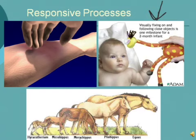The last responsive process is evolution. The picture shown is the evolution of the horse. This process occurs over long periods of time and enables a species to adapt and better survive long-term changes in its environment over many generations — not just one or two generations, but many, many generations.